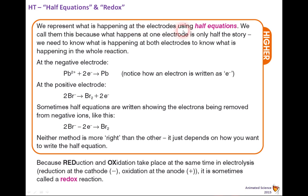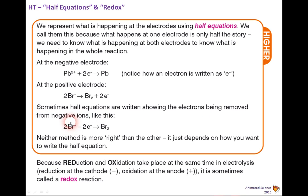We represent what is happening at electrodes using half equations. We call them this because what happens at one electrode is only half the story — we need to know what's happening at both electrodes to know what is happening in the whole reaction. At the negative electrode: Pb²⁺ + 2e⁻ → Pb. At the positive electrode: 2Br⁻ → Br₂ + 2e⁻. Sometimes half equations are written showing the electrons being removed from negative ions, moving the electrons to the other side. Neither method is more correct than the other — in your exam you might see both.